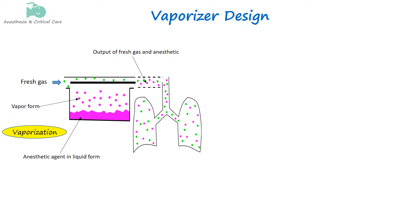The purpose of a vaporizer is to add anesthetic vapor into the fresh gas flow in a way that the output of the vaporizer delivers the set concentration of the anesthetic agent accurately.